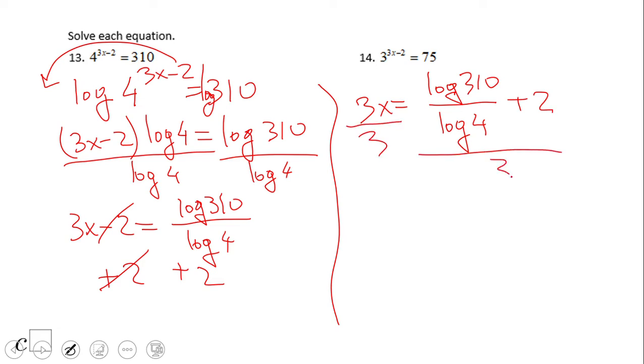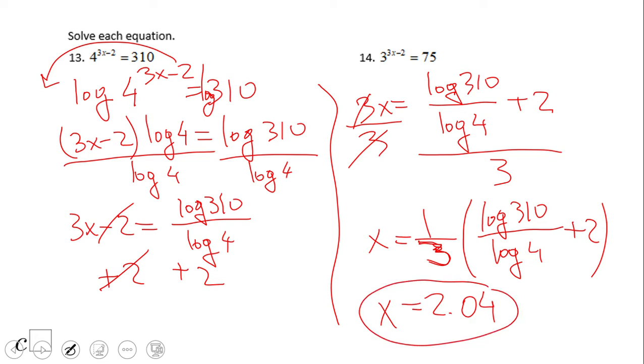So we're going to end up with 3x equals log of 310 over log of 4 plus 2. Then divide by 3, or multiply by one third. We have x equals one third times log of 310 over log of 4 plus 2. Let's calculate: log of 310 divided by log of 4, that would be 4.13. We add 2, that would be 6.13, then divide by 3, and we have x approximately 2.04.